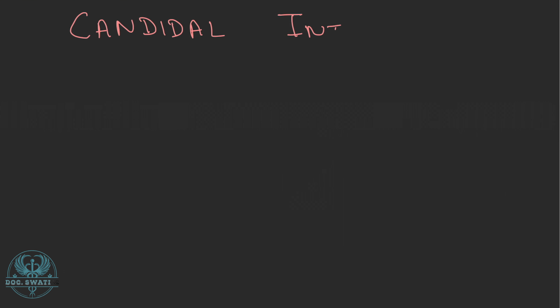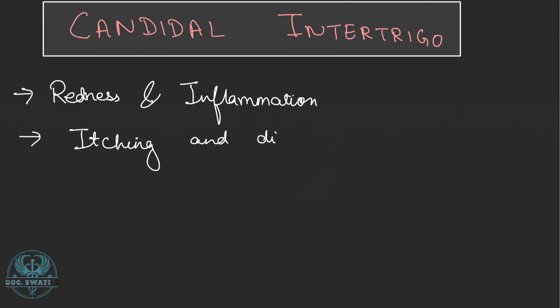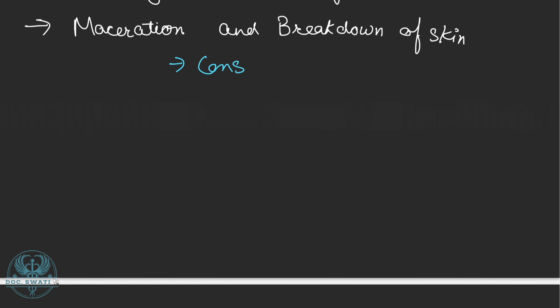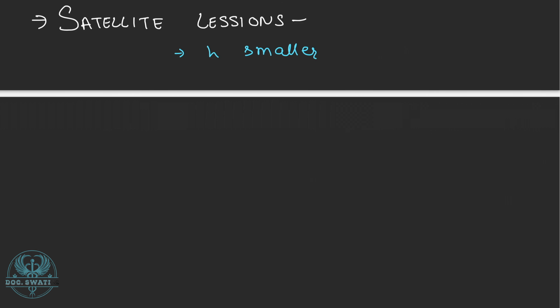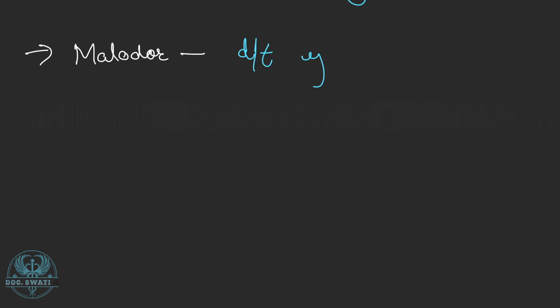Let's discuss the clinical features of Candida intertrigo. First, we observe redness and inflammation, along with itching and discomfort. There is maceration and breakdown of the skin, as the constant moisture and friction in skin folds can lead to maceration. Satellite lesions are also present — smaller areas of infection that develop around the main affected site; these are typically small, red, and may have a scaly appearance. There is also malodor, an unpleasant odor due to overgrowth of yeast in the affected areas.